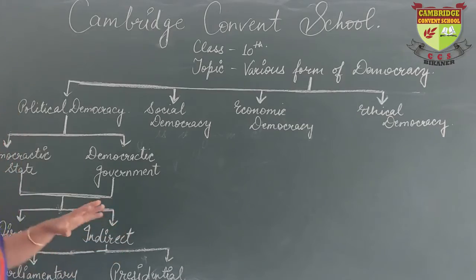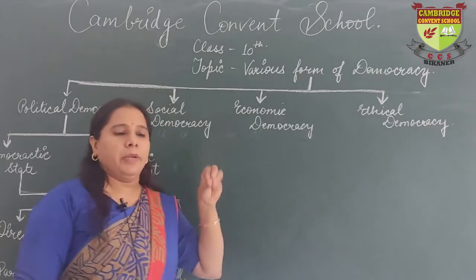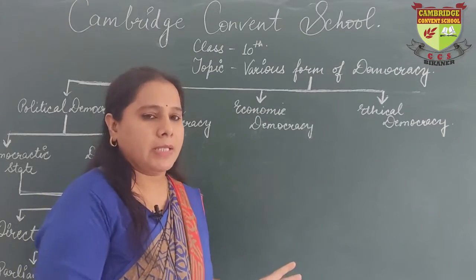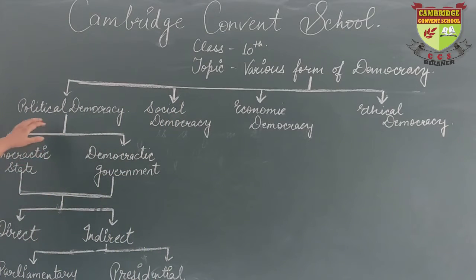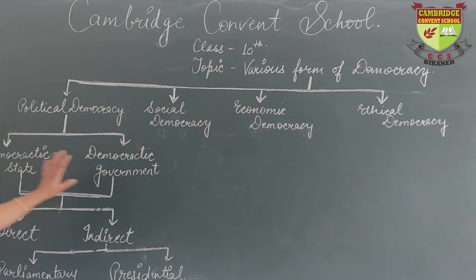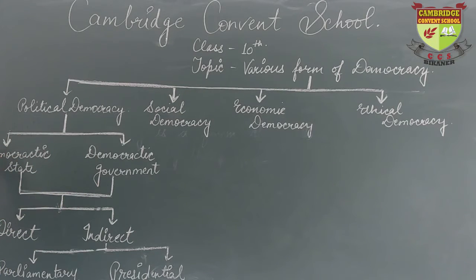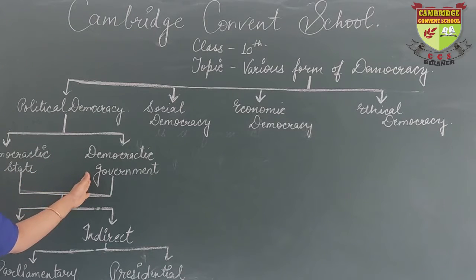Political democracy is also known as western democracy, because the main idea of democracy emerged from western countries. Political democracy has two forms: democratic state and democratic government. Democratic state is the theoretical form and democratic government is the practical form.